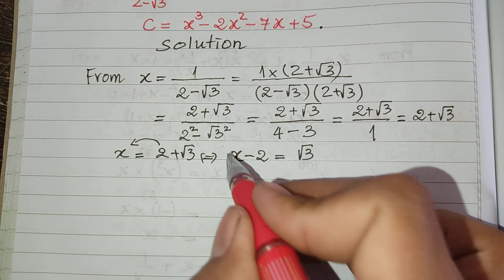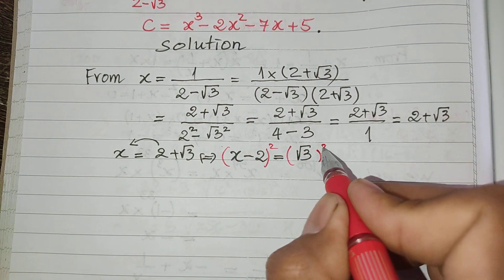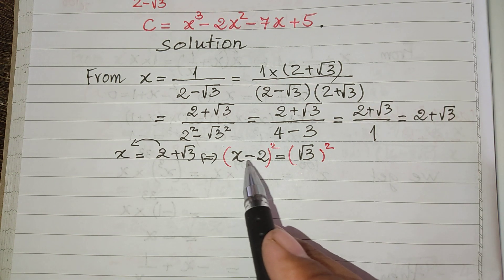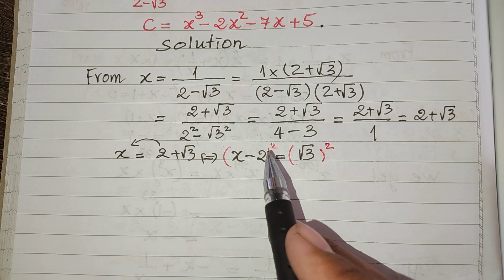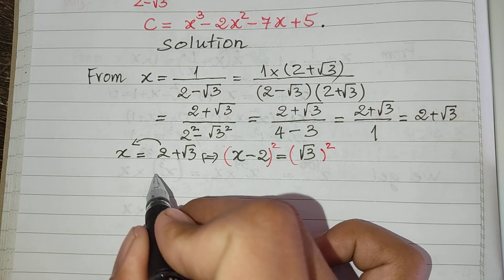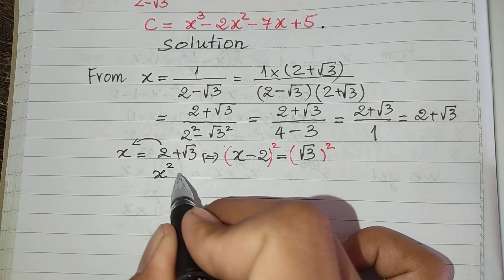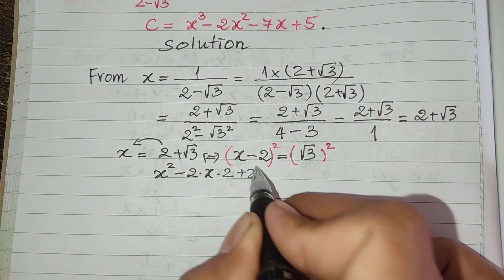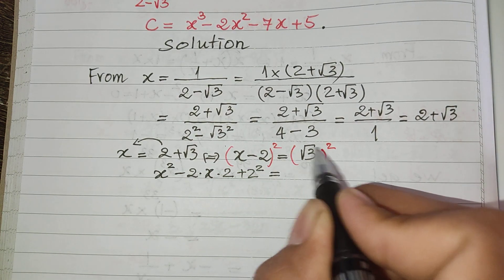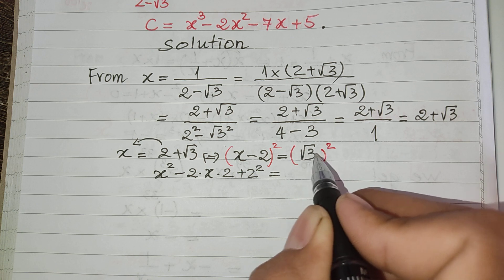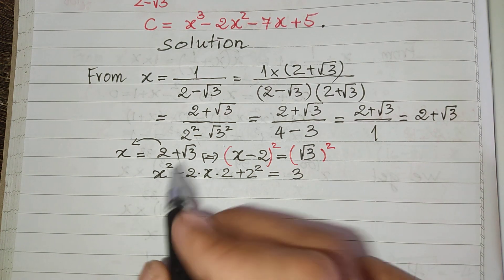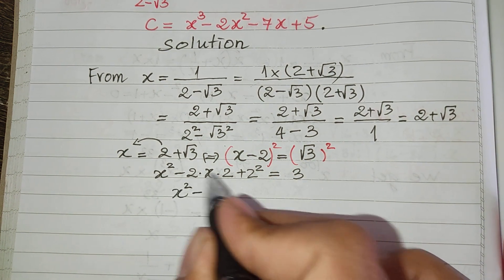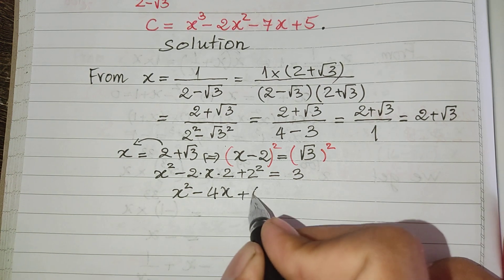Now I raise both sides of this equation to the square. I use the formula that a minus b squared equals a squared minus 2ab plus b squared. So we get h squared minus 4h plus 4, and we can cancel the radical with square root 3, so it equals 3. We get h squared minus 4h plus 4 equals 3.